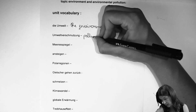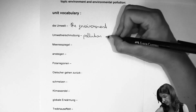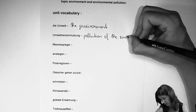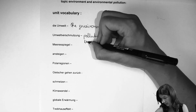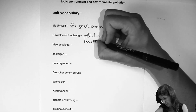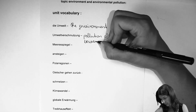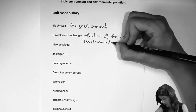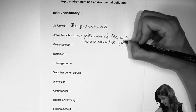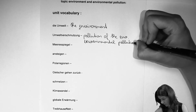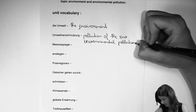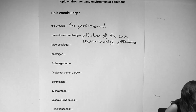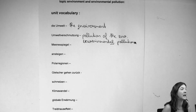We have 'pollution of the environment,' or another version that would be 'environmental pollution.' Make sure that you add the 'a' and 'l' to the word — environmental pollution would be another word for 'Umweltverschmutzung.'